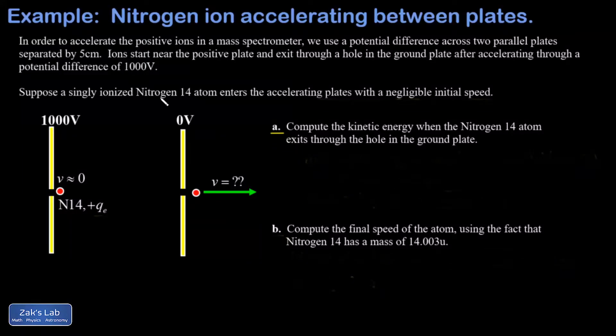In this video we're accelerating a positive ion between two plates held at a thousand volt potential difference. This is how charged particles are actually accelerated on their way into a mass spectrometer. We're using a singly ionized nitrogen atom in this problem. Singly ionized means one electron has been bumped off, leaving it with a charge of plus one elementary charge. Ultimately we want to find the final speed of this nitrogen atom.